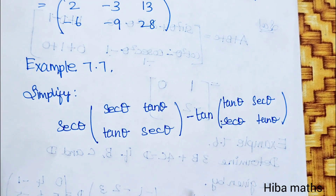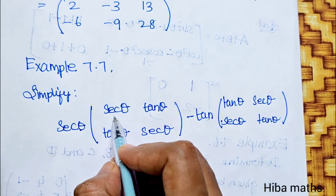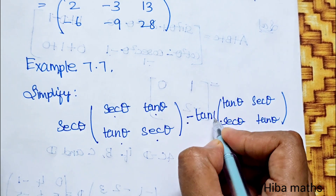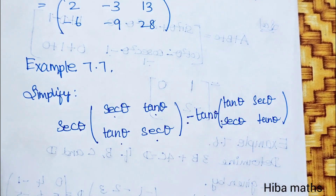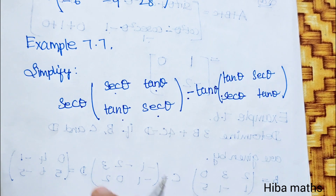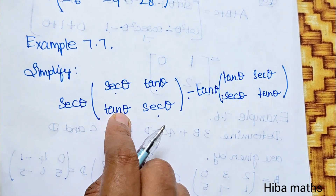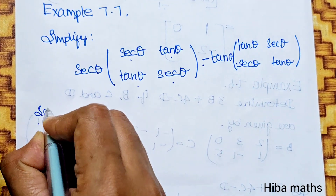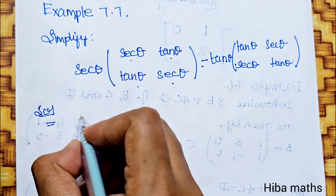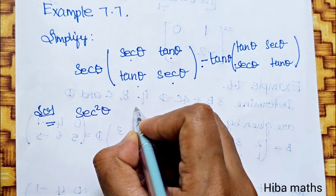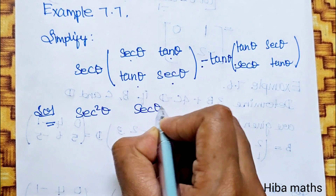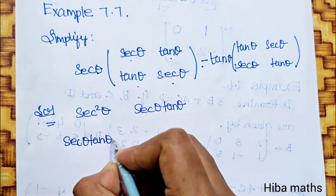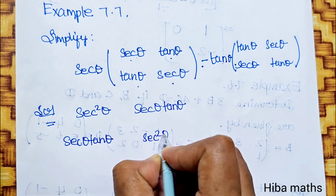Example 7.7: We are going to simplify secant theta into [secant theta, tan theta; tan theta, secant theta] minus tan theta into [tan theta, secant theta; tan theta, ...]. First, secant theta — secant inside multiple. In the solution, we multiply: secant theta into secant theta gives secant squared theta, secant theta times tan theta.